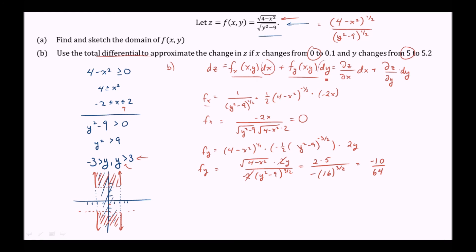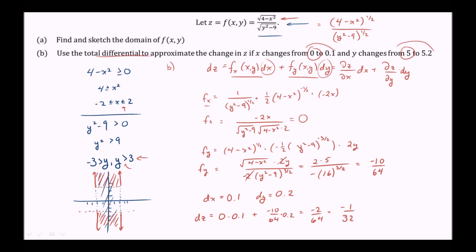Now we find dx and dy, the changes in x and y. The change in x is 0.1 minus 0, so dx equals 0.1. The change in y is 5.2 minus 5, so dy equals 0.2. Then dz is just multiplication and addition: 0 times 0.1 plus negative 10 over 64 times 0.2. So dz equals negative 2 over 64, giving a final result of negative 1 over 32 as the total differential approximation of the change in z. Thank you.